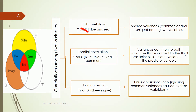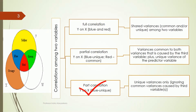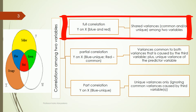So when we look at the correlation among two variables, we can look at the full correlation, partial correlation, or part correlation. The full correlation is the shared variance among the two variables — it could be the common variance. In the diagram shown, it is the blue area and the red area.